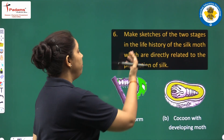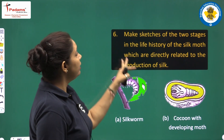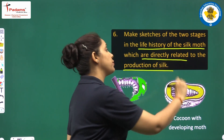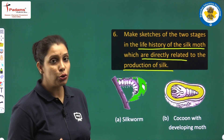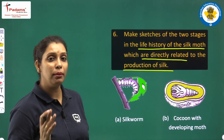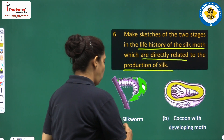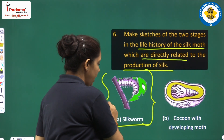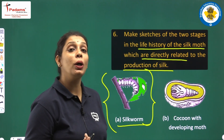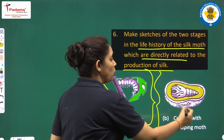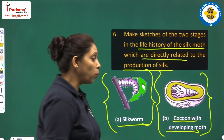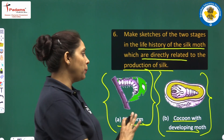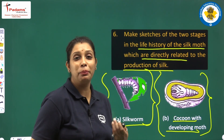Next question: make sketches of two stages in the life history of the silk moth which are directly related to the production of silk. The two stages directly related to silk production are the silkworm — you can easily draw that stage — and the cocoon. So you can draw the figure of a cocoon with a developing moth. You should prepare a colored diagram as it is more presentable.